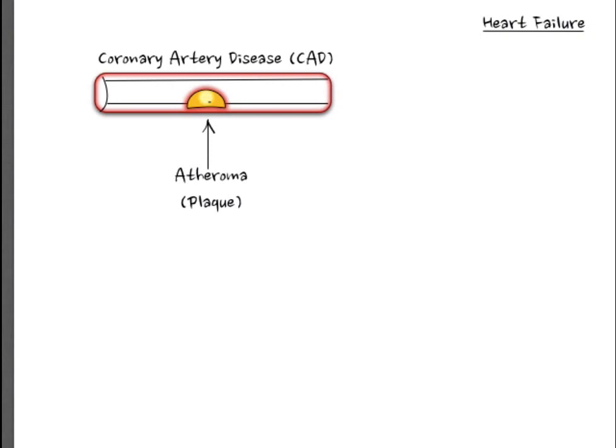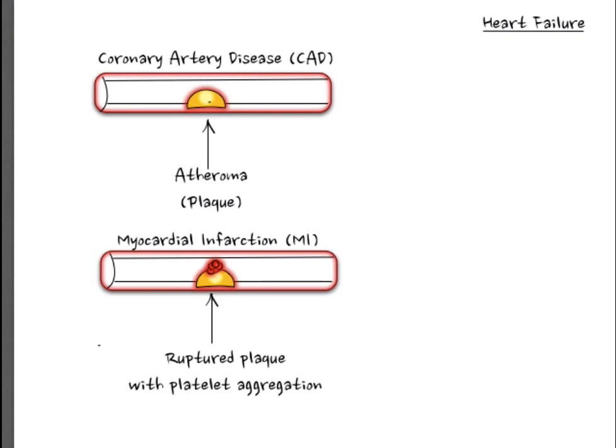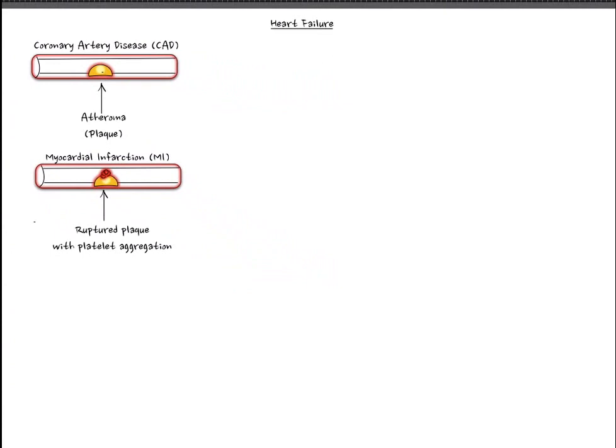This buildup of plaques is caused by a combination of factors including hypertension, cholesterol, and inflammation. Depending upon the size of the plaque, blood flow to the heart can be affected, thereby affecting oxygen delivery. Coronary artery disease can lead to myocardial infarction when the plaque ruptures, leading to platelet aggregation and clot formation, drastically decreasing blood flow and preventing oxygen delivery to the heart. Both situations lead to decreased oxygen delivery, precipitating cardiac cell death or dysfunction leading to heart failure.